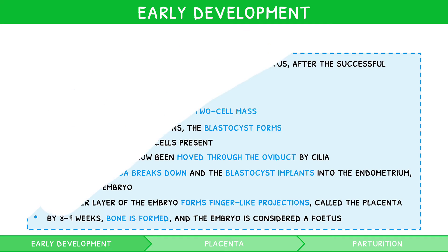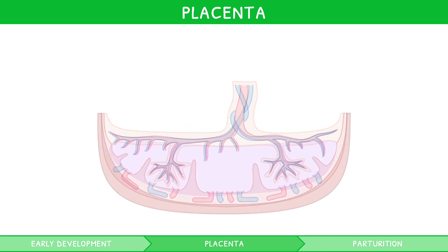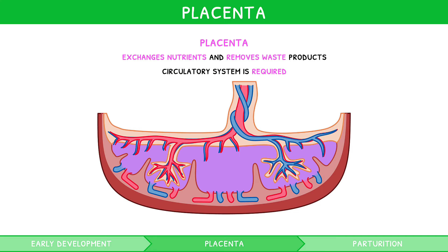The fetus is fixed in place and obtaining nutrients from the placenta. The placenta is a disc-shaped tissue structure made up of fetal tissues in intimate contact with maternal tissues. It is necessary to exchange nutrients and remove waste products from the fetus to enable growth. A circulatory system is required since an increase in size results in a decrease in surface area to volume ratio, thus decreasing the rate of diffusion. For your exam, you should draw the structure and explain the function of the placenta in detail.